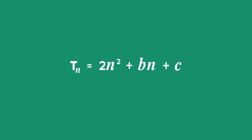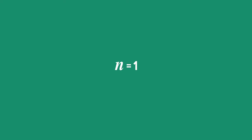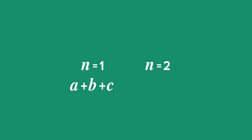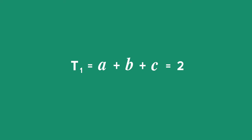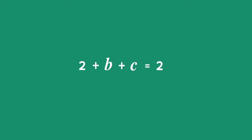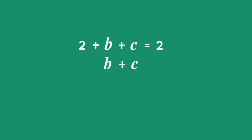We are going to use simultaneous equations. When n = 1, the first term has value a + b + c. We know term 1 equals 2 and a equals 2, so: 2 + b + c = 2. Simplifying, b + c = 0, which means b = −c. We call this equation 1.